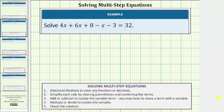We want to solve the given equation. The solution is a value of x that satisfies the equation or makes the equation true. For this equation, the solution is a value of x that makes 4x + 6x + 8 - x - 3 equal to 32.